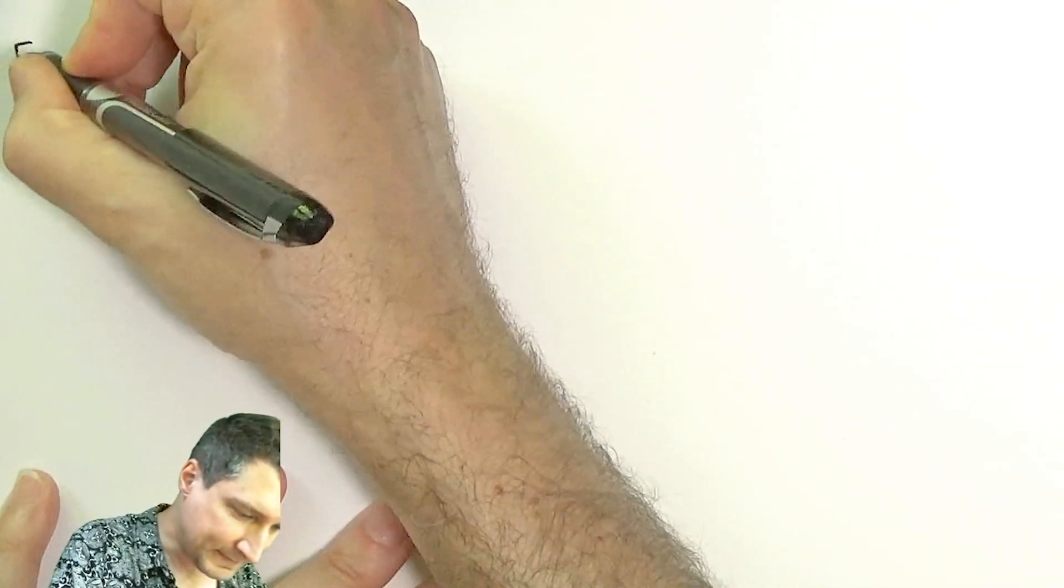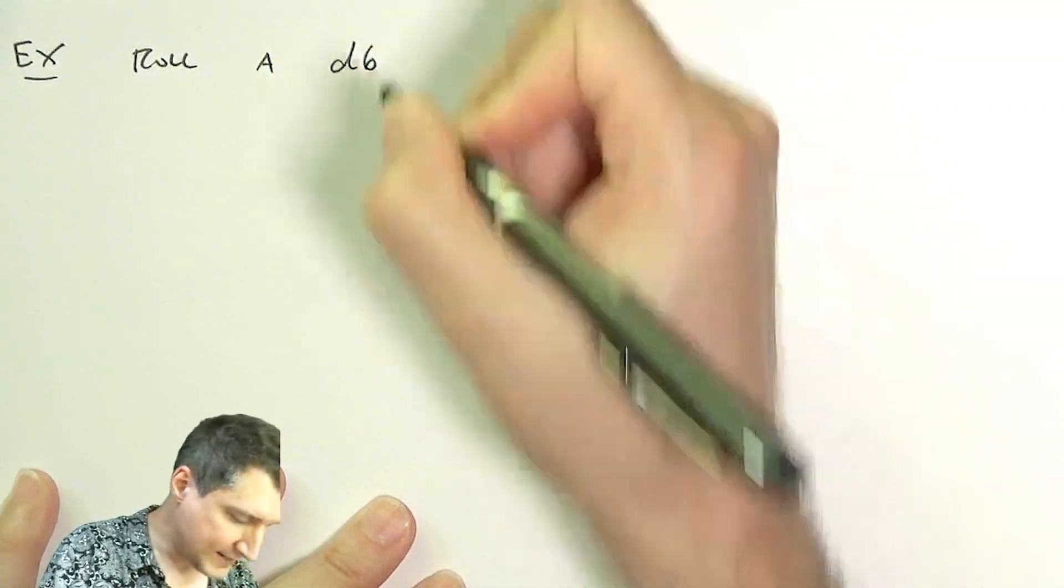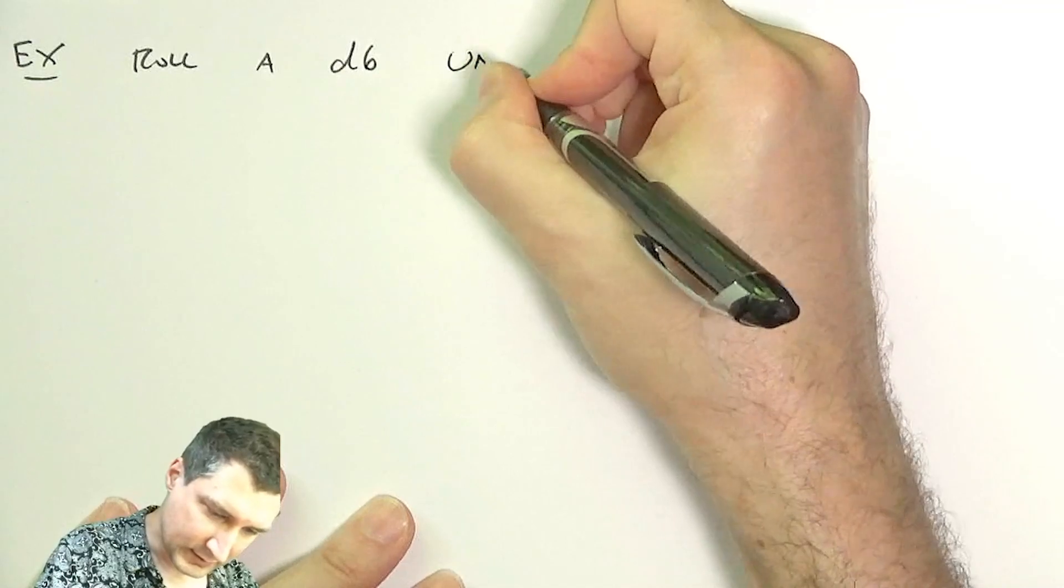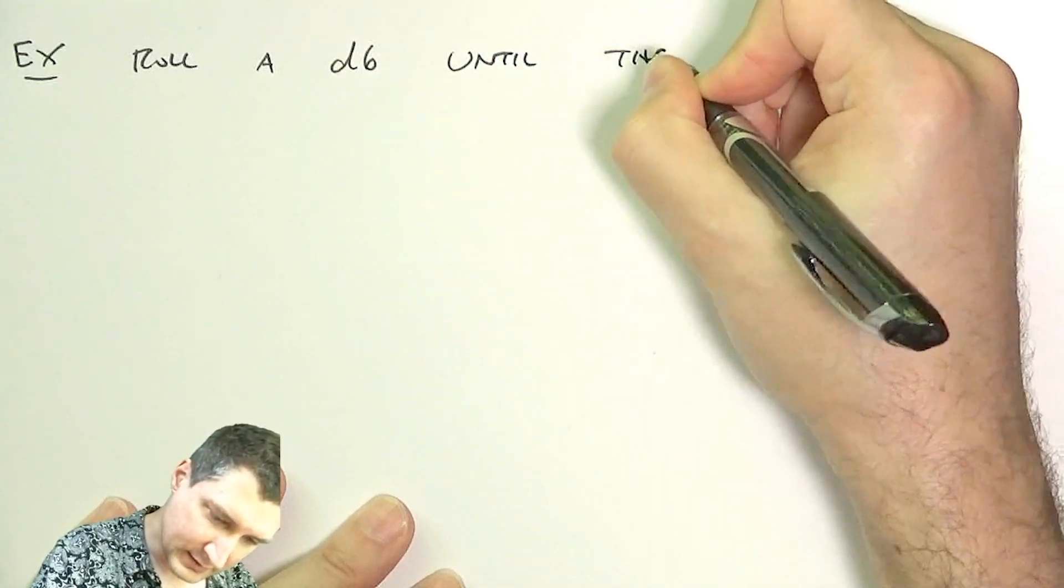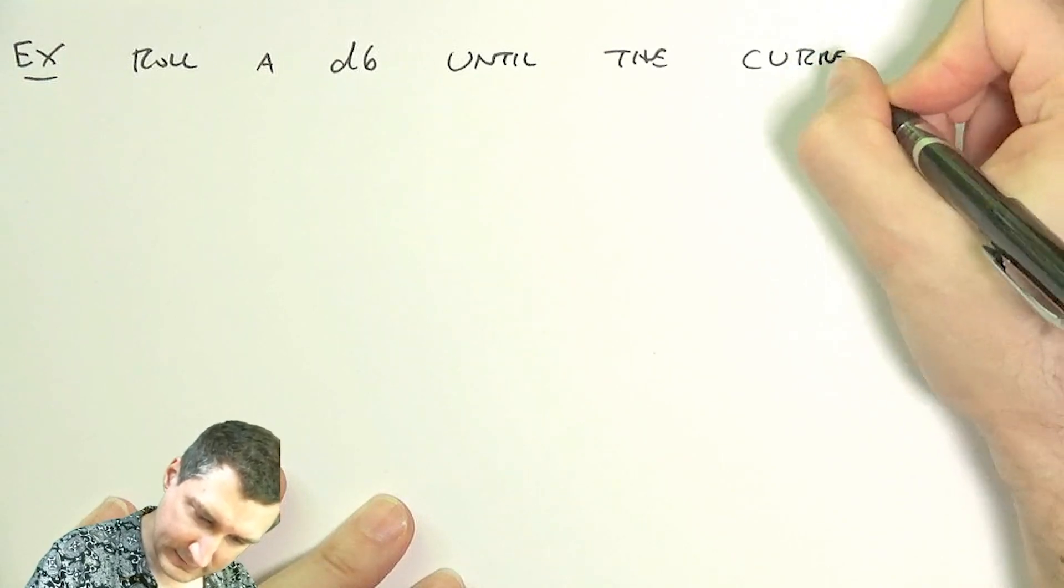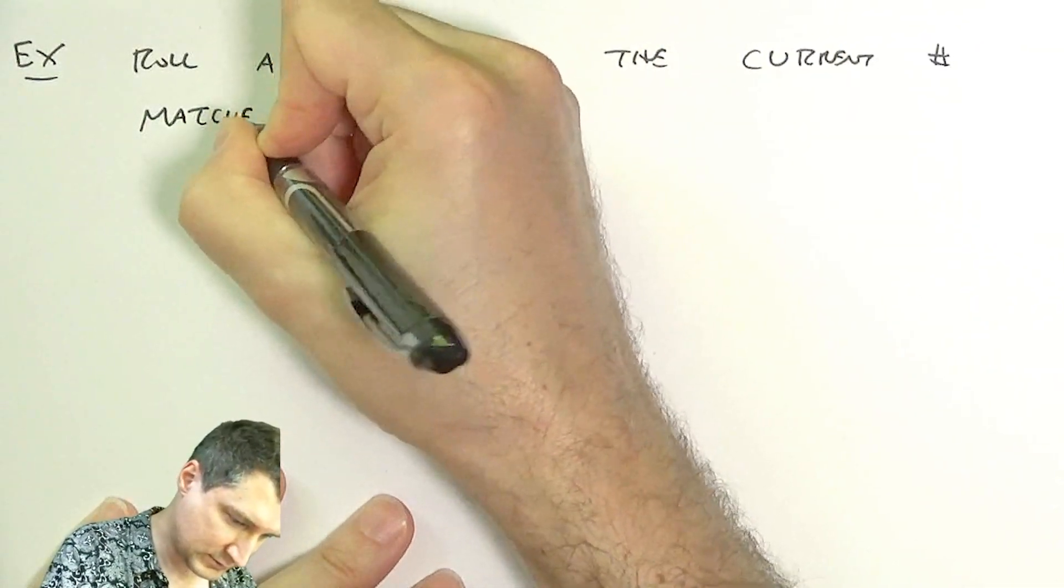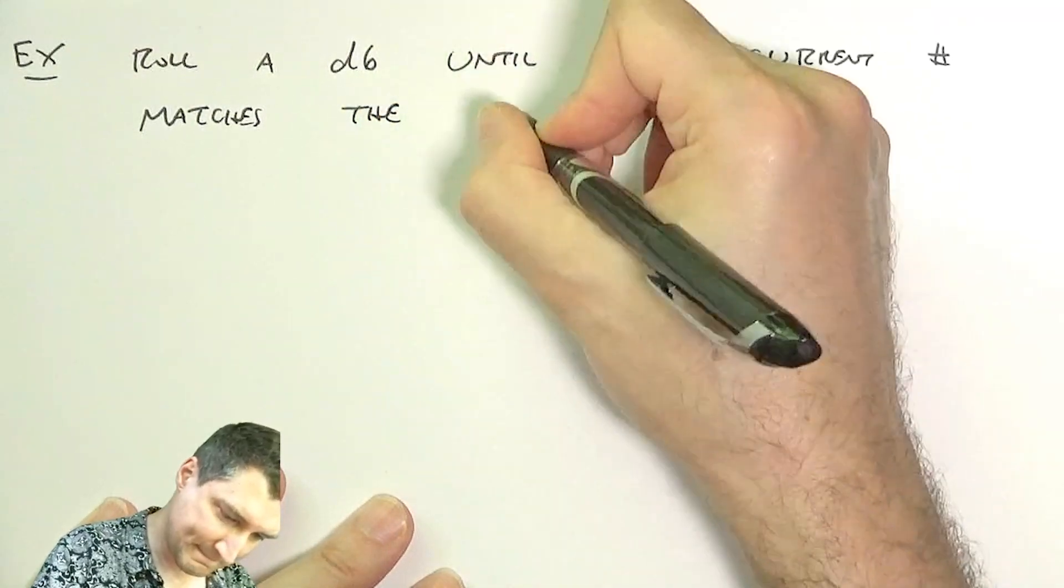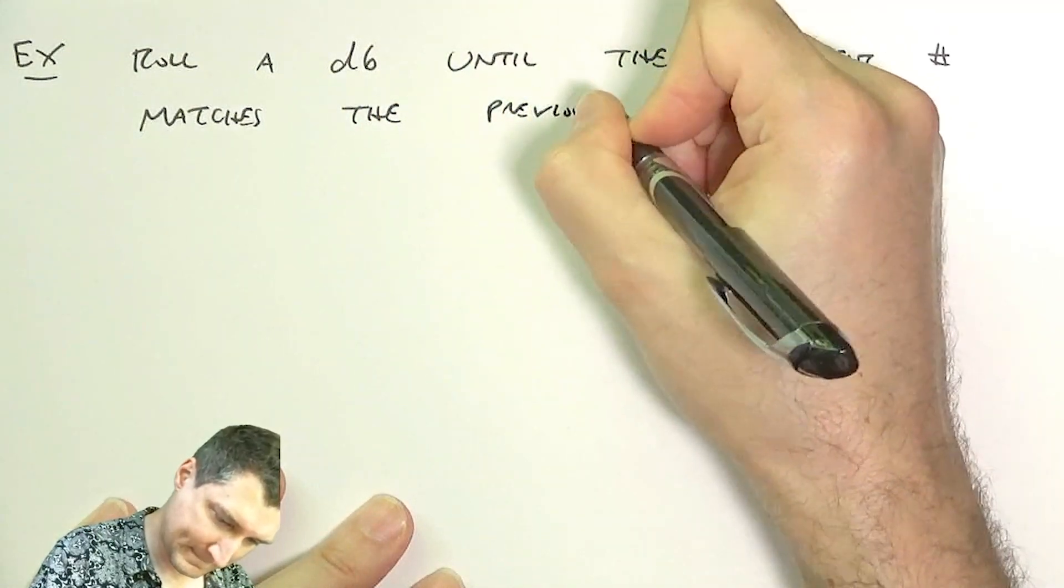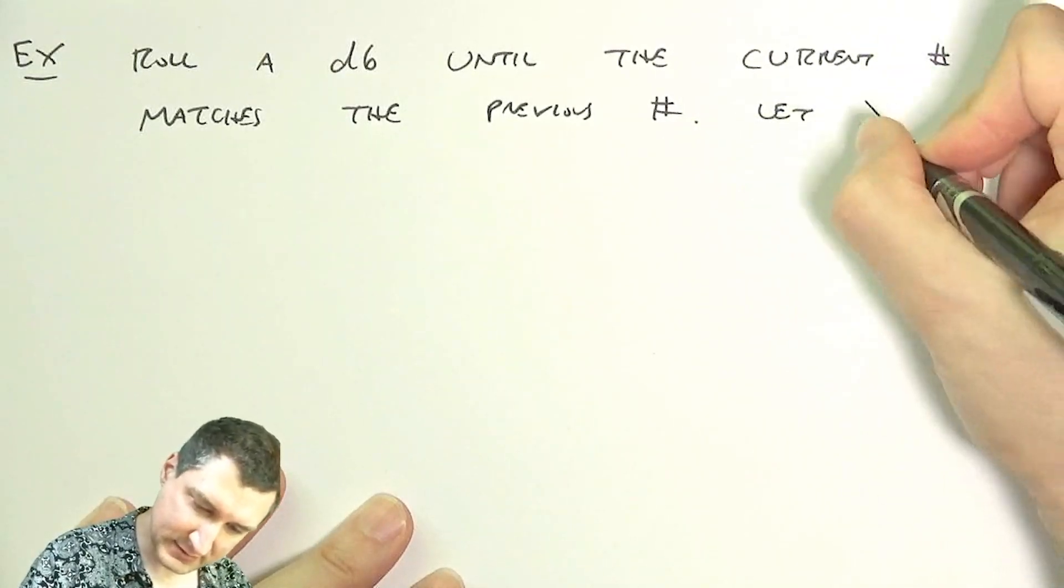This idea of taking apart things into individual outcomes we can even do when the sample space is infinite, but it takes a little bit more doing. For example, we could say: roll a six-sided die until the current number matches the previous number. And let X be that roll.